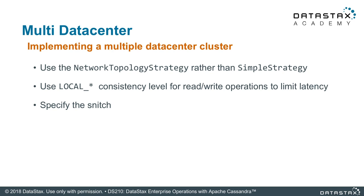If you're going to have a data center over here, maybe you don't want your quorum to stretch over that WAN link. You have to start thinking about it ahead of time in an application sense — I only want the quorum to be satisfied in the local data center. And then you need to specify the snitch, which is covered in a different module, but just know that the snitch is responsible for where your data is being placed.